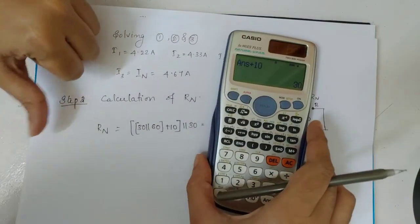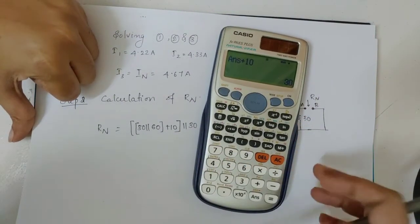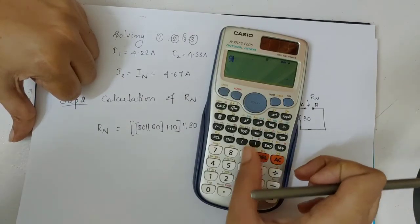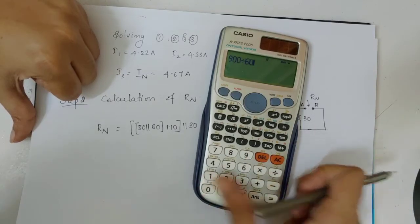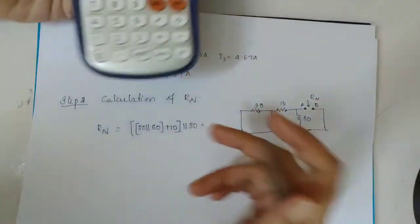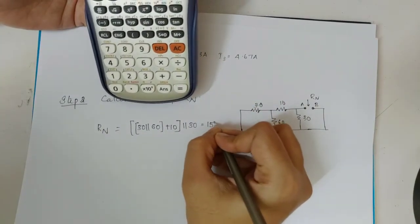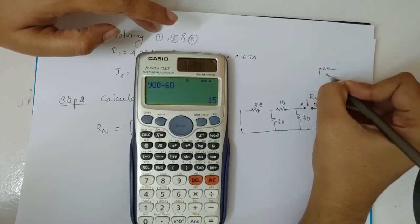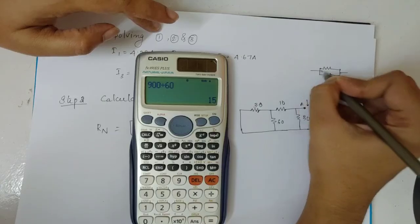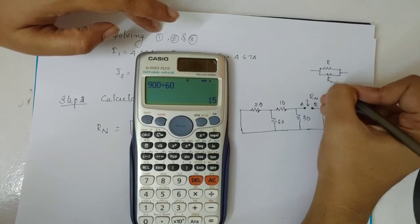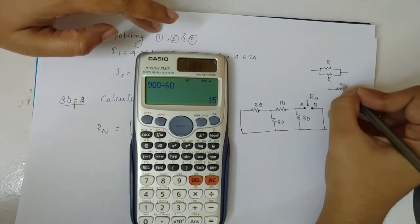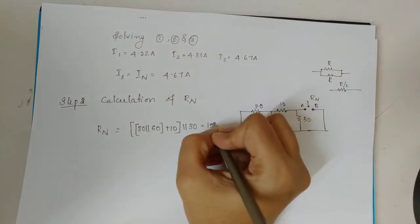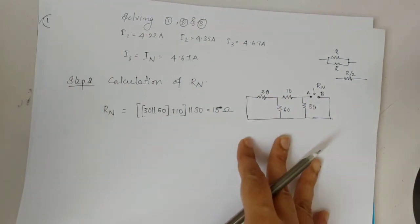Adding 10 ohms gives 30 ohms. Then 30 ohms in parallel with 30 ohms: (30 × 30) divided by 60 equals 900 divided by 60 equals 15 ohms. Since R parallel R equals R by 2, we get Rn equals 15 ohms.